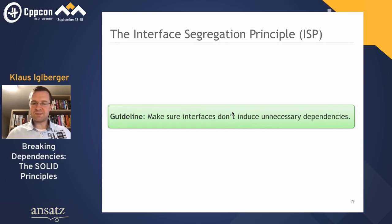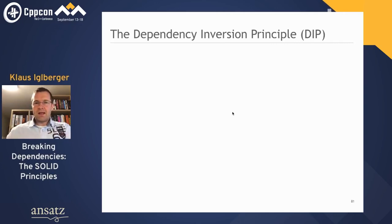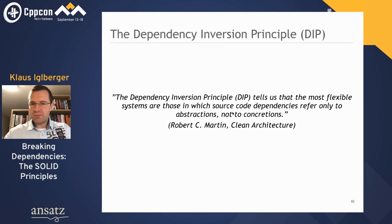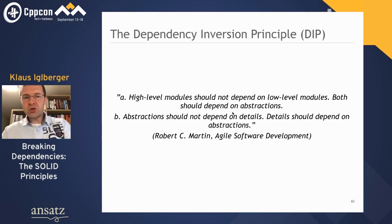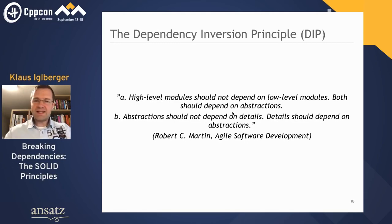Interface Segregation is, to some extent, a special case of the Single Responsibility Principle — if you try to adhere to that, you might automatically also deal with ISP. Now, the fifth and last principle is the Dependency Inversion Principle — which is a little more complex and involves a small excursion into architecture. Robert Martin explains it: the most flexible systems are those in which source code dependencies refer only to abstractions, not to concretions. High-level modules should not depend on low-level modules; both should depend on abstractions. And abstractions should not depend on details — details should depend on abstractions.